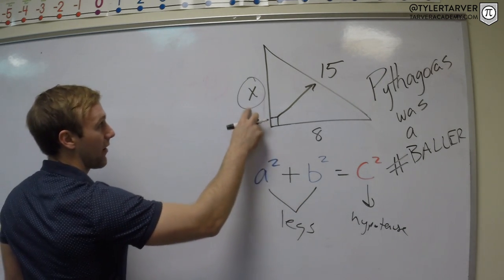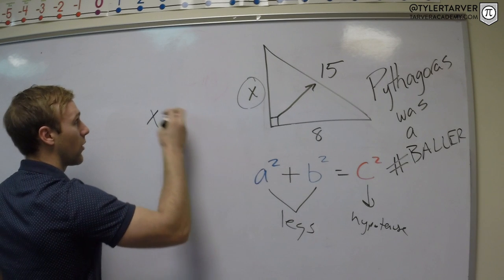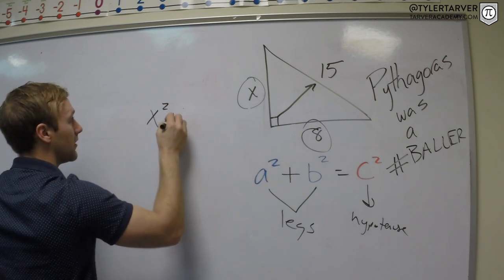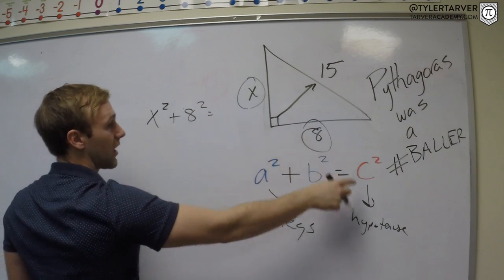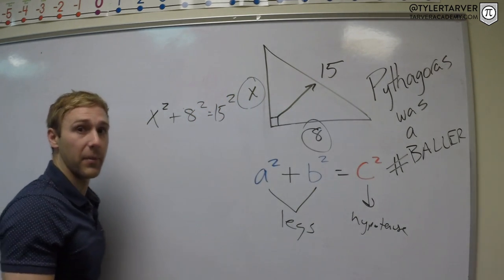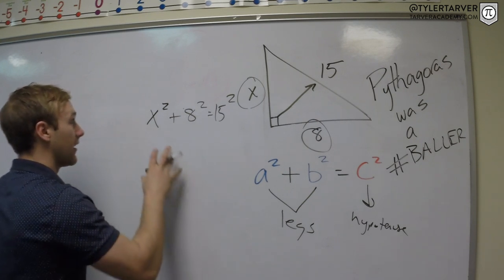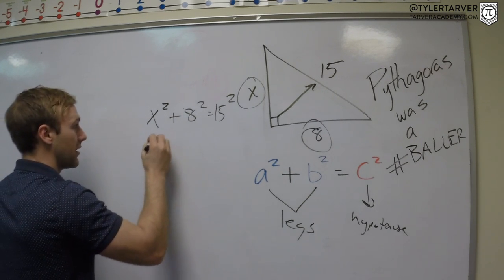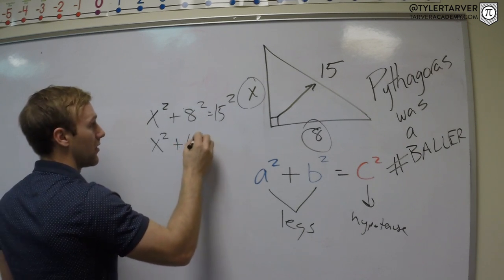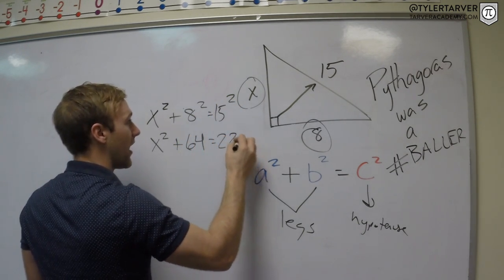So we know, I'm going to rewrite it. A and B doesn't matter, I can pick X and 8. X squared plus B squared, which will be our 8, equals our hypotenuse squared, which is 15 squared. Now I'm going to simplify as much as I can. Can't simplify X squared because we don't know X. 8 squared is 64, 15 squared is 225.